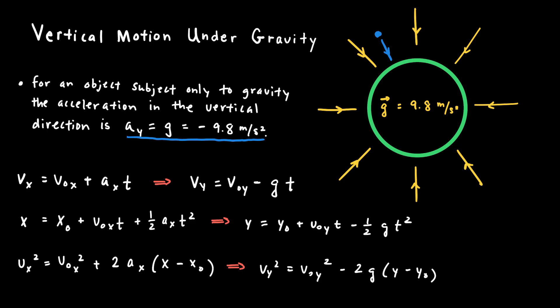But typically, if we define our coordinate system so that the positive direction points upwards or away from the surface of the Earth, then that acceleration will also need to be negative, since it opposes that positive direction which we've defined to be away from the center of the Earth.